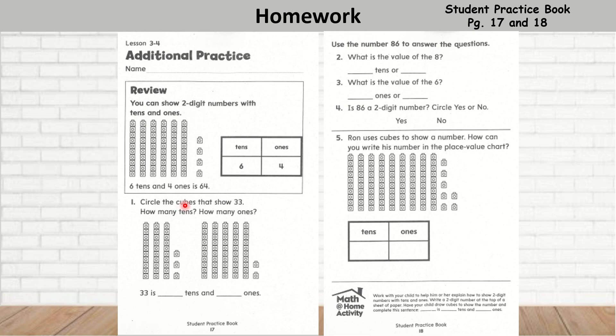So question number one, it says circle the cubes that show 33. So here I see one ten, two ten, three tens, and I see three one. So that is 33. This one is bigger because it is one, two, three, four, five tens, which means 50, 52. Well, I need to circle 33. So the answer is this first one. Now, it says 33 is how many tens? 33 is three tens and three ones.